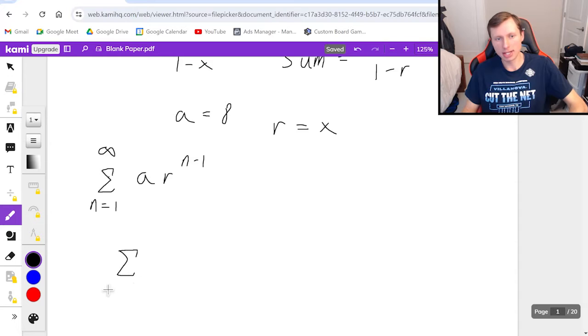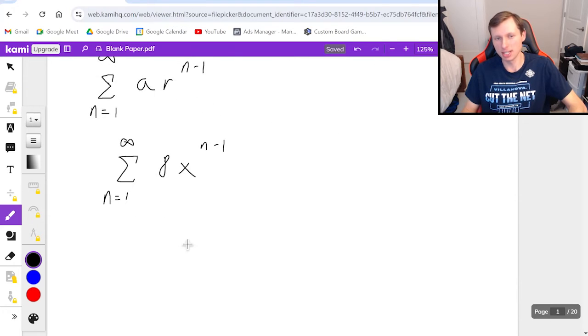So then this can be written as the power series, series from n equals 1 to infinity, of 8 times x to the n minus 1. And there, now it's a power series. And because it's a power series, I can find the radius and interval of convergence very easily.